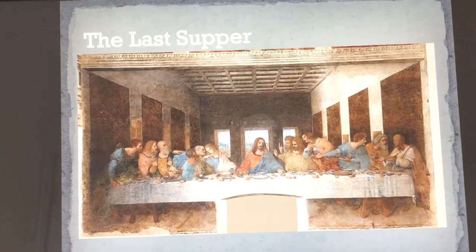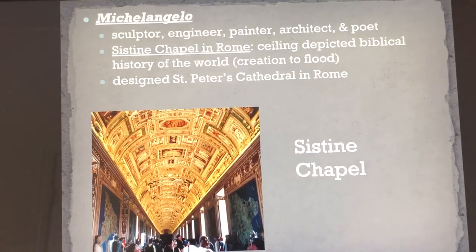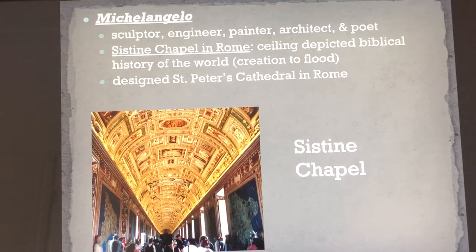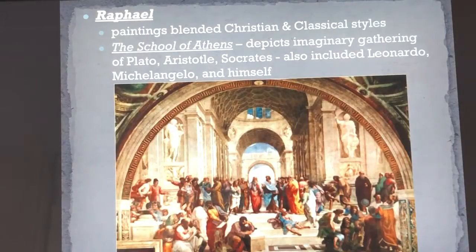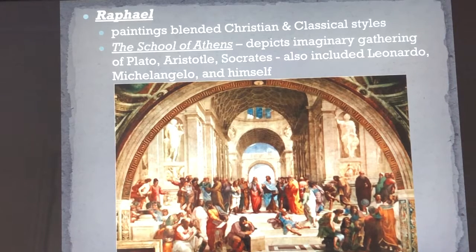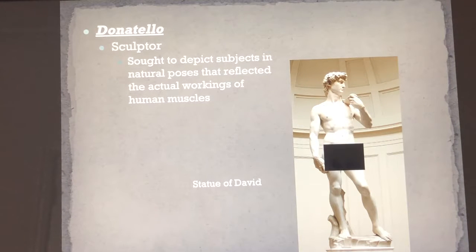Michelangelo is known for the Sistine Chapel, where he depicts the entire creation and biblical story in St. Peter's Cathedral. Raphael is going to focus on classical and Christian styles — for example, the School of Athens, where he incorporates ideas of Roman and Greek architecture, revitalizing that back into the Renaissance. Donatello is our sculptor and he creates the David.